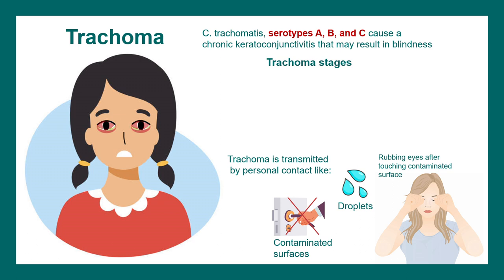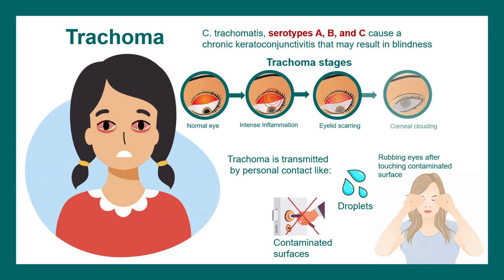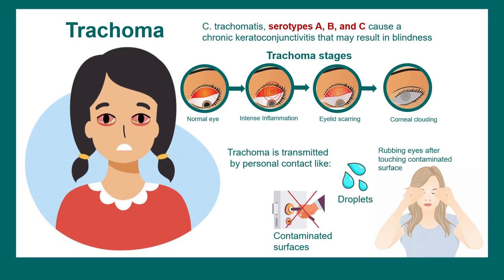There are different stages of trachoma. Initially the eye appears normal, but in early stages there is intense inflammation. Then scarring occurs in the eyelids, and eventually there can be clouding of the cornea, leading to blindness if untreated — this occurs frequently in low-income countries like those in Africa.